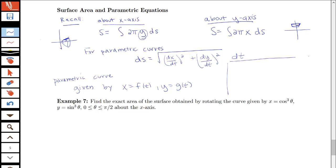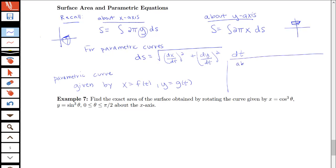So to put this together, about the x-axis, we'll now have that our surface area is an integral from α to β of 2π times g of t times the square root of dx/dt squared plus dy/dt squared dt.